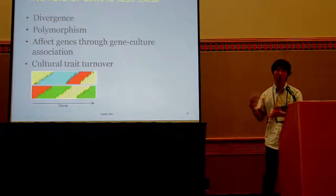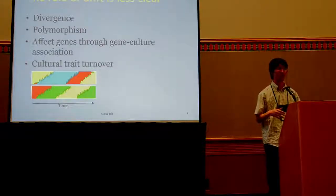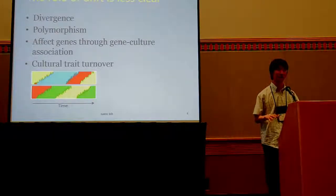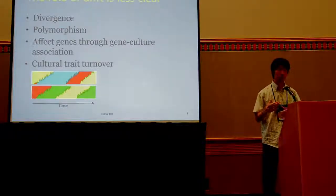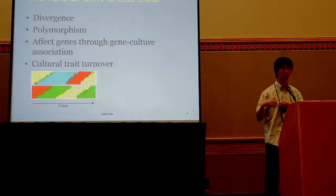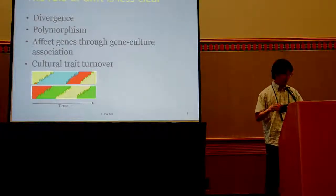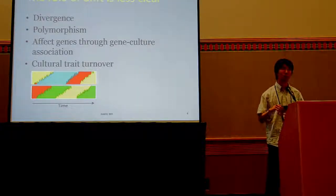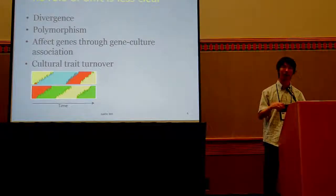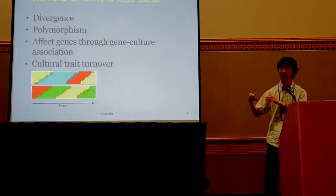Another thing that can potentially contribute to all of this is drift, though its role is less obvious because it can do many different things. For example, with some allopatry it can increase divergence, but it can also lead to loss of polymorphism. When there is gene-culture association, cultural drift should indirectly affect genetic divergence as well. Lastly, there is cultural trait turnover — the replacement of cultural traits over time through drift — which is particularly interesting because it allows cultural traits to change over time while potentially still maintaining differences between subpopulations.